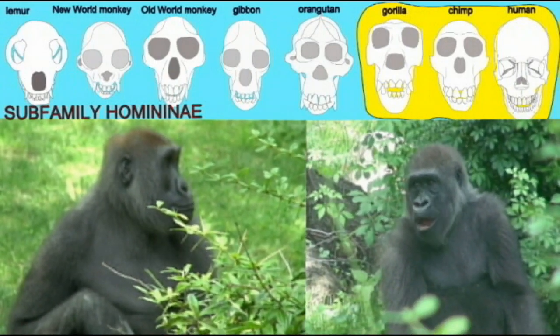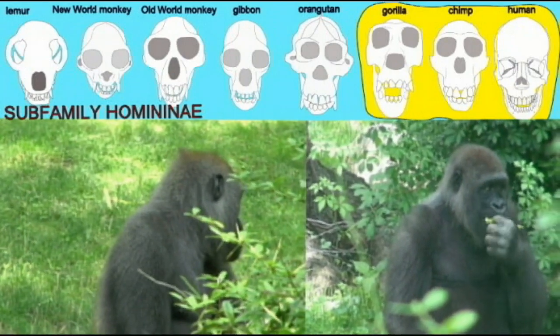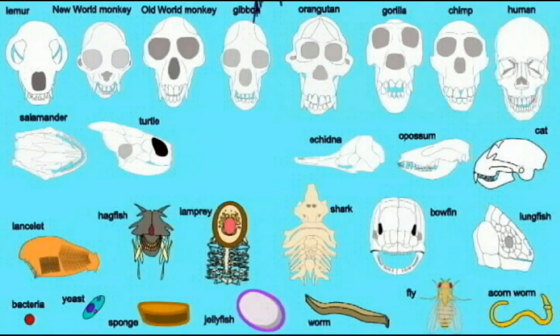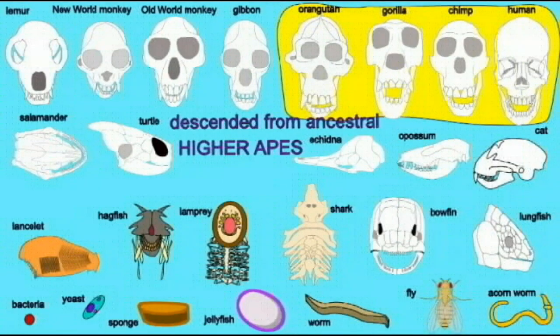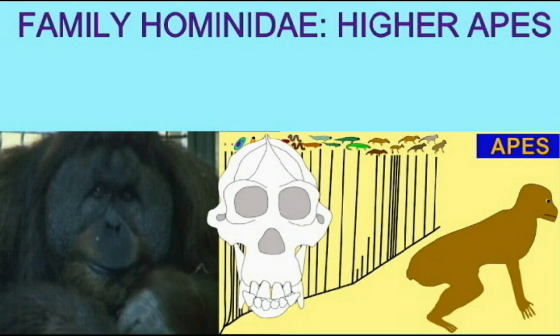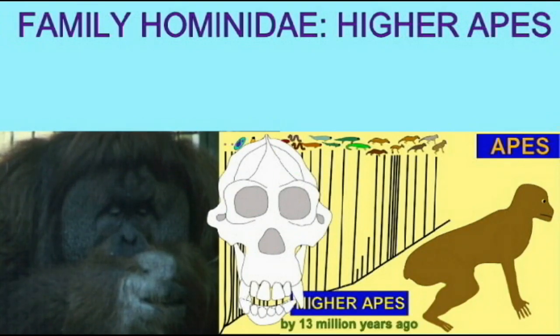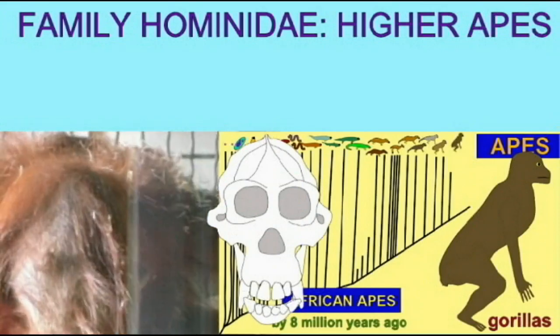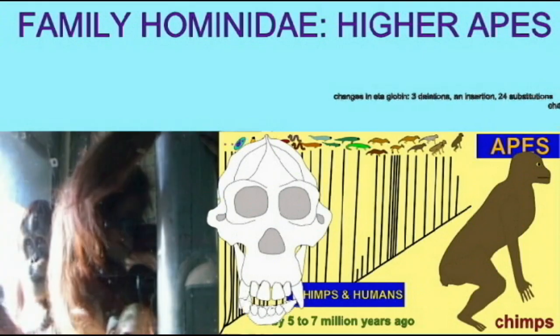These three genera are more closely related to each other than any are to other organisms outside this group, and this group is classified as the subfamily Homininae. Note that the differences within this group — especially between chimps and humans — are minor compared to many differences observed within other primate groups in subsequent groupings in this study. While humans, chimps, and gorillas are in subfamily Homininae, these groups plus orangutans are classified together in the family Hominidae. Orangutans are more closely related to Homininae than to any other organisms, but less closely related to humans than chimps and gorillas, and that is reflected in these sequence comparisons.